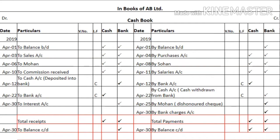The first column is for date, the second column for particulars — you can also write 'receipts'. The third column is for voucher number, then ledger folio, cash, and the next column is for bank. The same columns appear on the credit side; the only difference is that instead of 'particulars' you can write 'payments'.